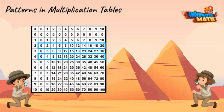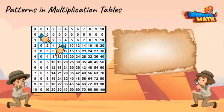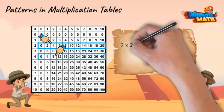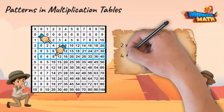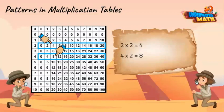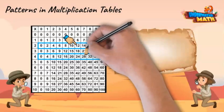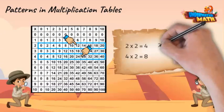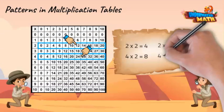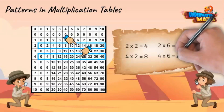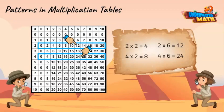Okay, one more pattern. What do you notice about the multiples of two and four? Well, let's see. Two times two equals four and four times two equals eight. The multiples of four are double the multiples of two. Here is another example: two times six equals twelve and four times six is double twelve, which is twenty-four.